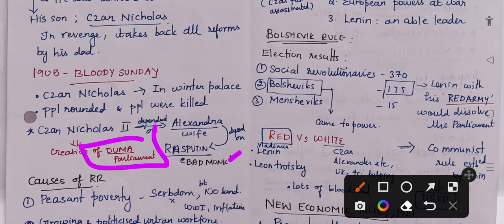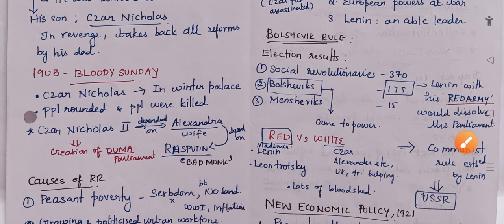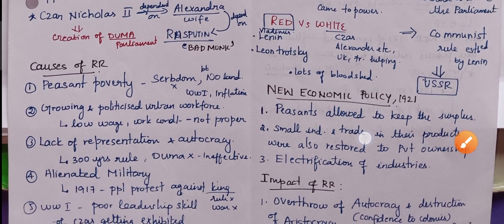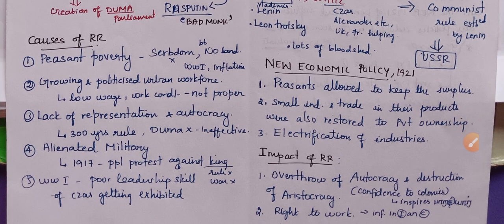Tsar Nicholas took back all the reforms made by his father, was dependent on his wife Alexandra, and she was dependent on Rasputin. All these led to a big tragedy again, and this is how the Russian Revolution emerged.